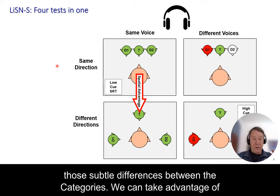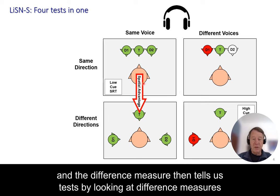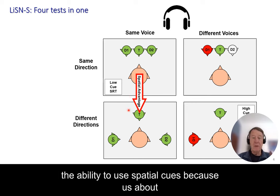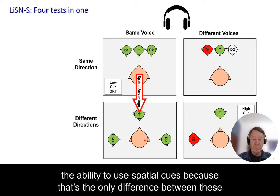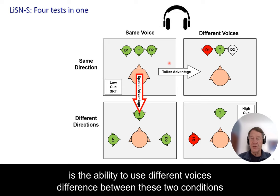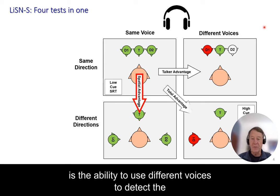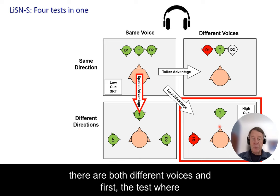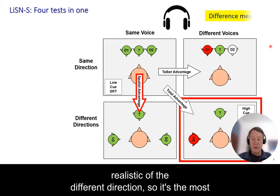We can take advantage of the subtle differences between the subtests by looking at difference measures. One difference measure tells us about the ability to use spatial cues, because that's the only difference between those two conditions, whereas another tells us about the ability to use different voices to detect the target. The first subtest given is the condition where there are both different voices and different directions, so it's the most realistic of the conditions.